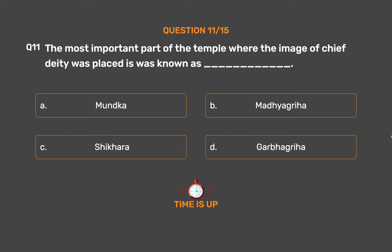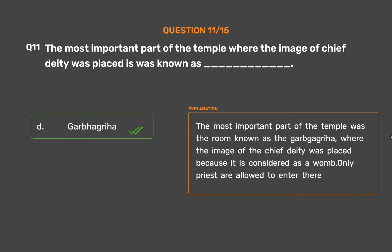The correct answer is Option D: Garbha Griha. The most important part of the temple was the room known as the Garbhagriha, where the image of the chief deity was placed, as it is considered a womb. Only priests are allowed to enter there.